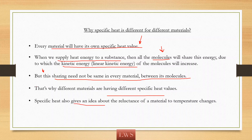Specific HEAT also gives an idea about the reluctance of a material to temperature changes. Reluctance means an opposition — the material is not ready to change its temperature. Once we start applying HEAT, only beyond a certain value is it ready to change. Water has the highest reluctance; it has a high specific HEAT, so water must absorb a large amount of HEAT for its temperature to change. If a material has low reluctance, that is low specific HEAT, it will easily change its temperature.